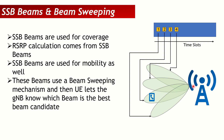Until the UE has sent its PMI, CQI, and CSI reports, the gNodeB doesn't know where the UE is. As explained in the Massive MIMO video, PMIs tell the gNodeB the UE's location. But before the UE shares its PMI, the gNodeB can use the SSB beam information to direct all traffic and channels to the UE using that beam. If you have more SSBs — for instance eight — you have eight beams, which will be narrower.